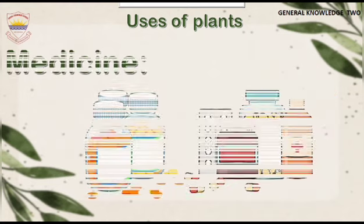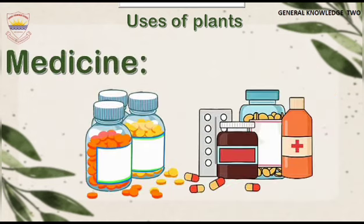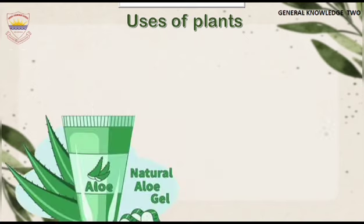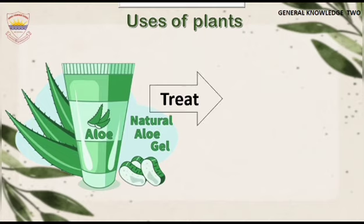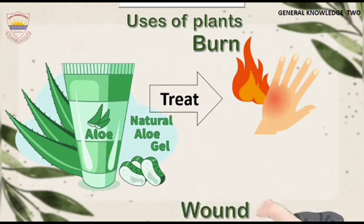Medicines. Plants have been used for centuries to make medicines. For example, the aloe vera plant is known for its soothing gel, which can be used to treat burns and wounds.